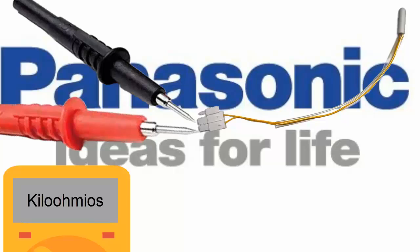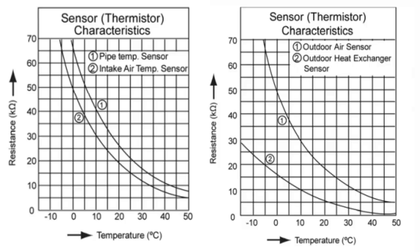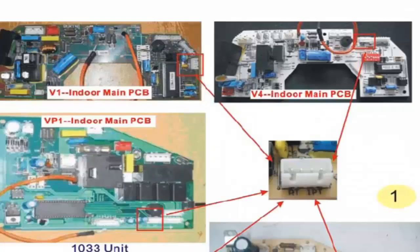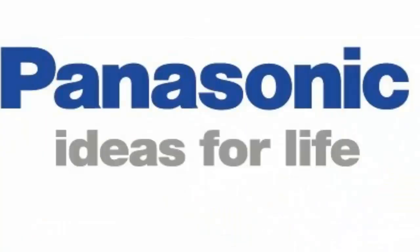Step 7: If you have the unit's manual, compare the measured value with the sensor specification table. Step 8: If the error persists, visually inspect the electronic board that controls the sensor for faults. Step 9: Consider replacing the involved electronic board if the problem continues.